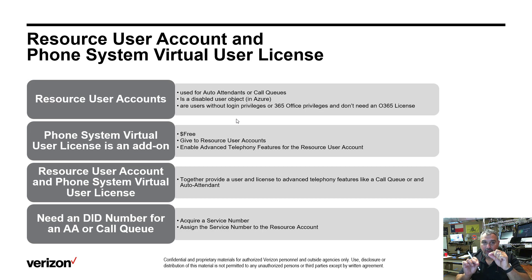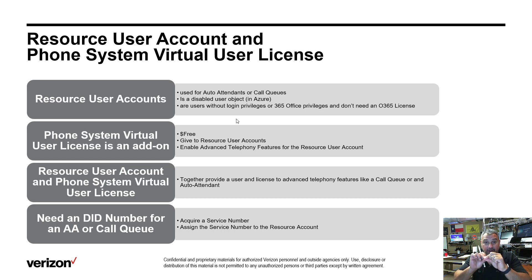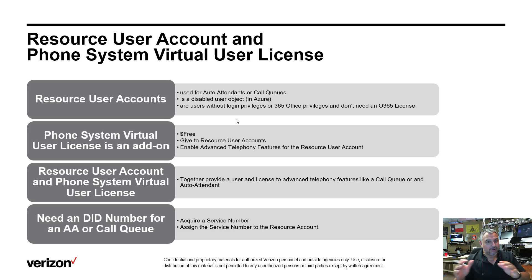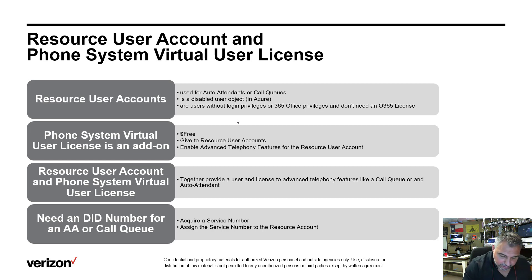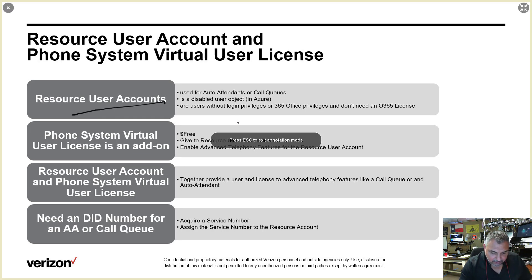If you create an auto attendant, you attach this resource user to it and assign the virtual Phone System license — which is free. Now you can have an auto attendant or call queue without paying any money, and then you can attach a service number to it later. To recap: a resource user is used for auto attendants and call queues.